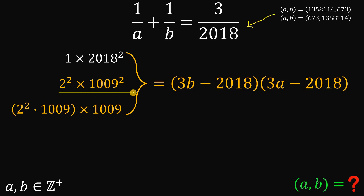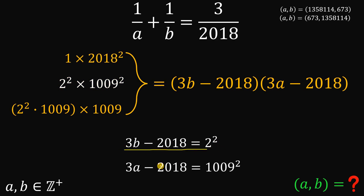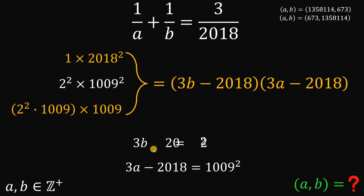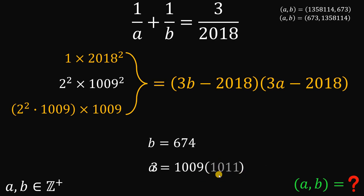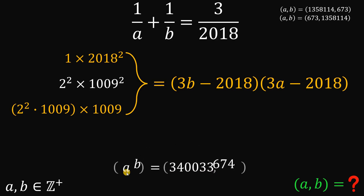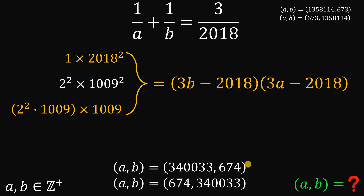For the second factor pair — 4 times 1009 squared — we set 3B minus 2018 equals 4 and 3A minus 2018 equals 1009 squared. Solving for B: 4 plus 2018 equals 2022, divided by 3 gives B equals 674. Solving for A: 1009 squared plus 2018 equals 1009 times 1011, and 1011 divided by 3 equals 337, so A equals 337 times 1009 equals 340,033. This gives us the third pair: A comma B equals 340,033 comma 674.